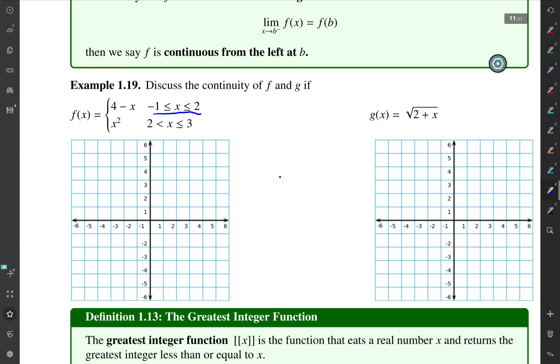It's defined to be x squared. So I'll draw the 4 minus x part first. 4 minus x would be a line with y-intercept 0, 4, and so that's just a line right there with slope negative 1 and y-intercept 0, 4.